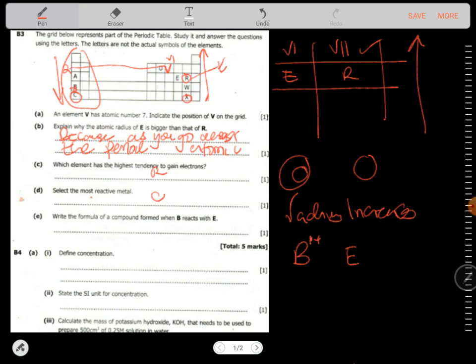So in a cross multiplier, you are going to have something like E, these two come down here. You are going to have something like this. So here the compound will be B2E.